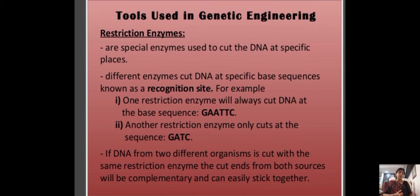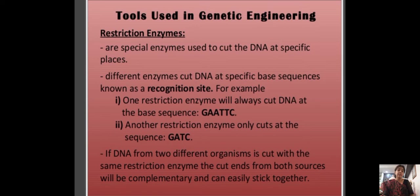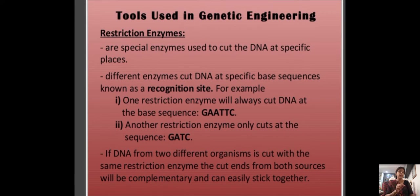The molecular scissors used to cut DNA molecules are known as restriction enzymes. They cut DNA at a particular size. One restriction enzyme will always cut DNA at the base sequence GAATTC. Another restriction enzyme only cuts at the sequence GATC — this is called the particular recognition site.